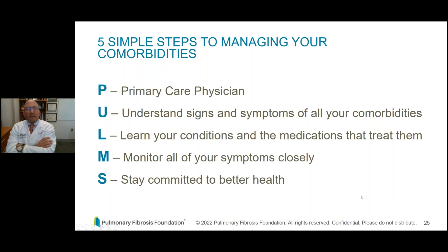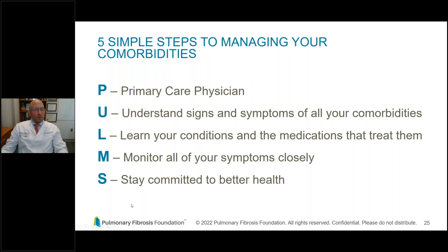What can you do to manage all of your comorbidities and avoid the hierarchical model? I came up with an acronym I call PULMS — P-U-L-M-S, short for pulmonary but also standing for: P is Primary care physician; U is Understand the signs and symptoms of all your comorbidities; L is Learn your conditions and medications to treat them; M is Monitor all of your symptoms closely; and S is Stay committed to better health. I'm going to go through each of these in a little more detail.